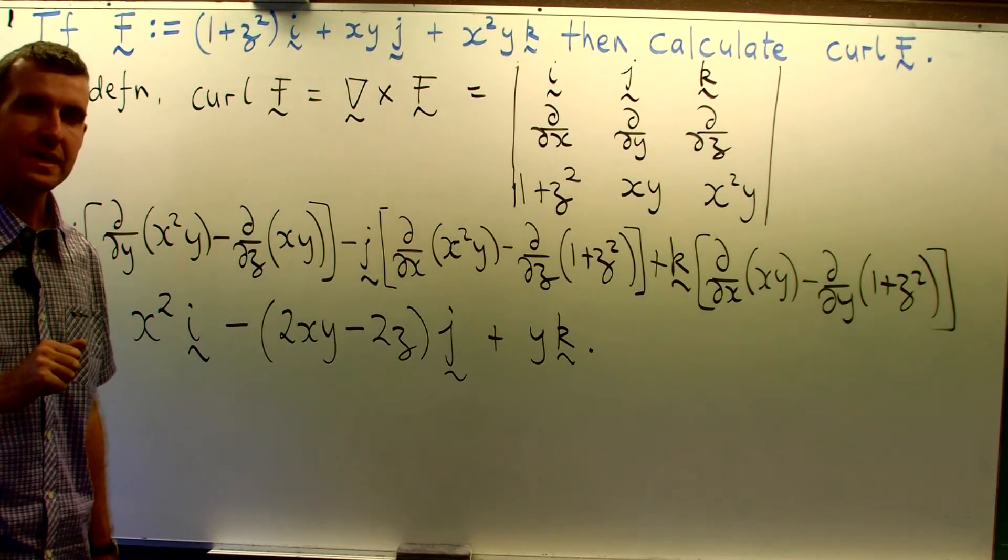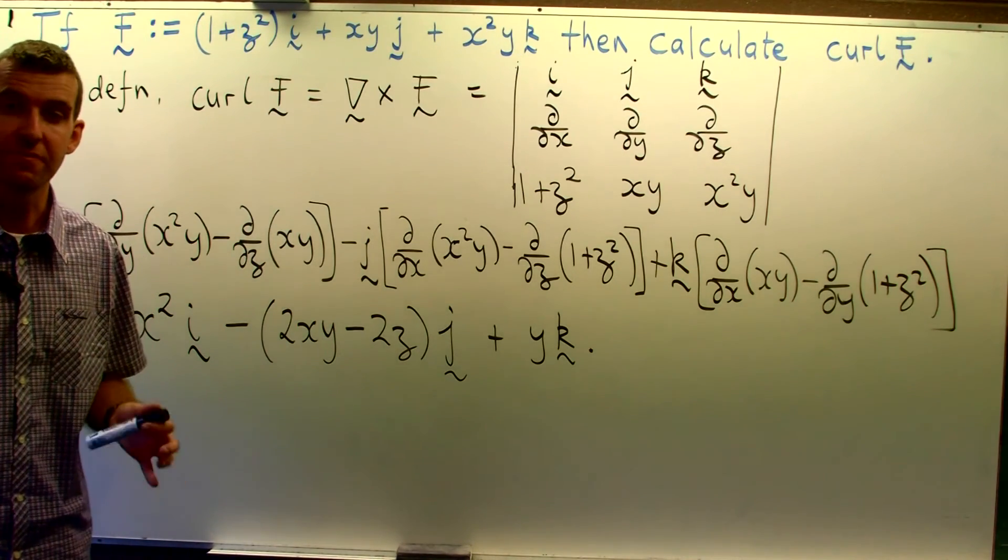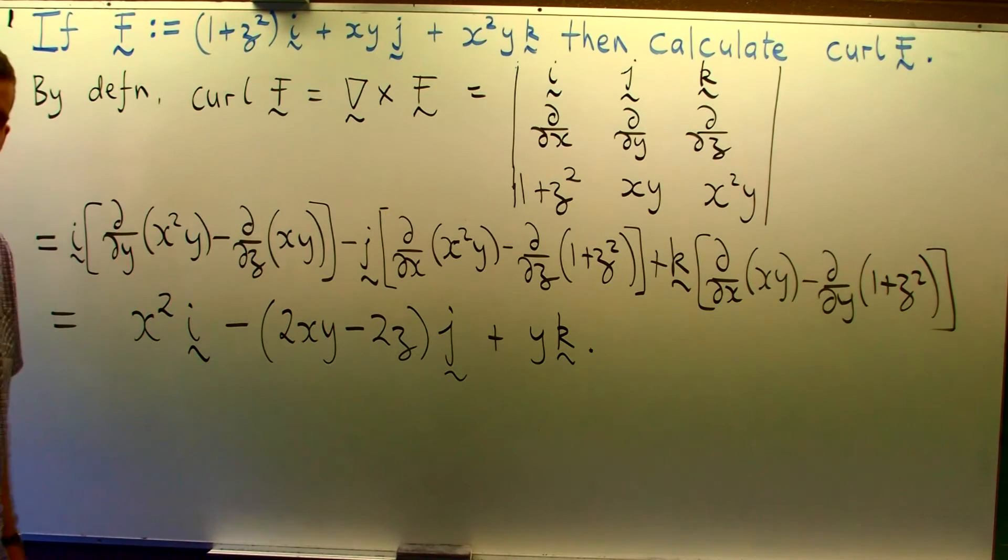Okay so for example if the vector field was a velocity field of a fluid and you took the curl at a point and you had a non-zero curl at a point. Then there would be some tendency for that fluid to rotate or swirl around that point. Thank you.